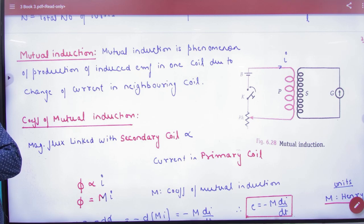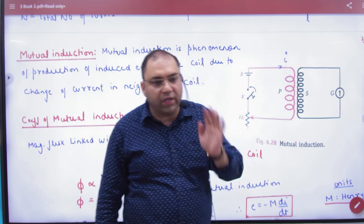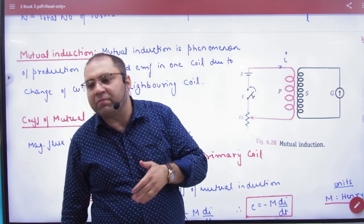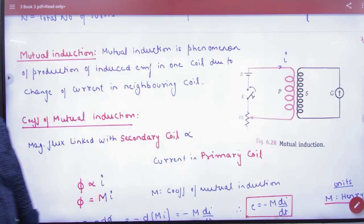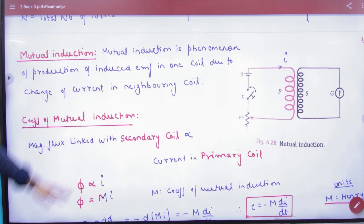When we study mutual induction, we don't talk about self-induction. When the current changes and the flux changes, self-induction occurs, but when studying mutual induction we don't consider it. The current changes in one coil, EMF is induced in the neighboring coil — this process is mutual induction.